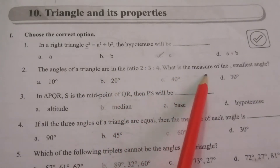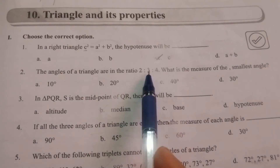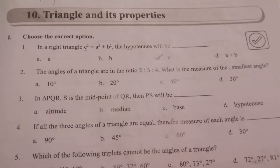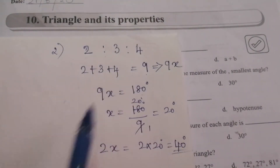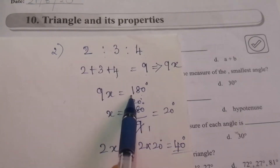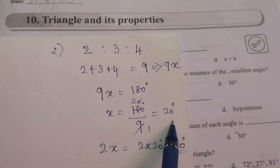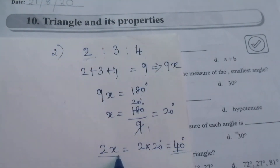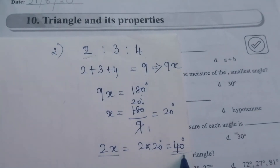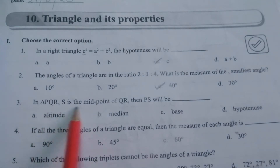Question 2: the angles of a triangle are in the ratio 2:3:4. What is the measure of the smallest angle? We know the sum of the three angles of a triangle equals 180°. So 2 + 3 + 4 = 9, meaning 9x = 180°. Therefore x = 180 ÷ 9 = 20°. The smallest angle is 2x = 2 × 20° = 40°. The answer is 40°, option C.